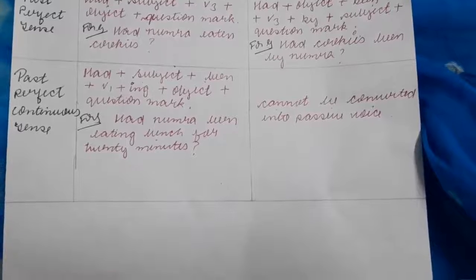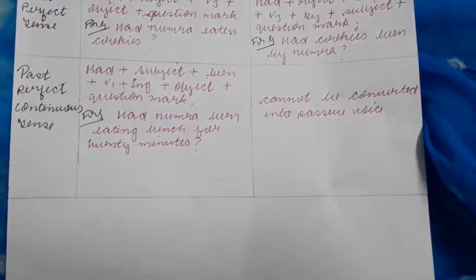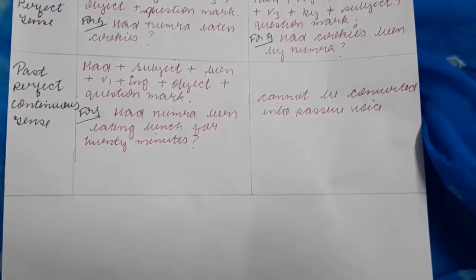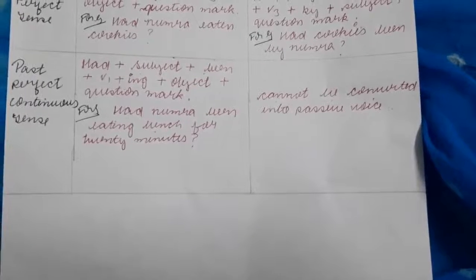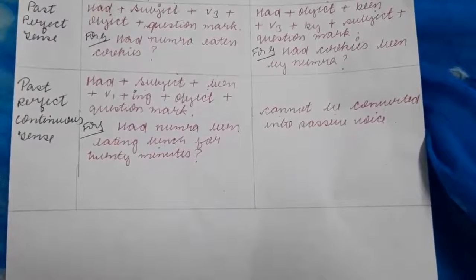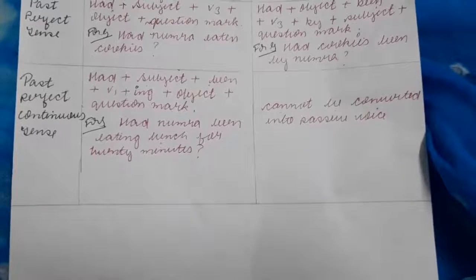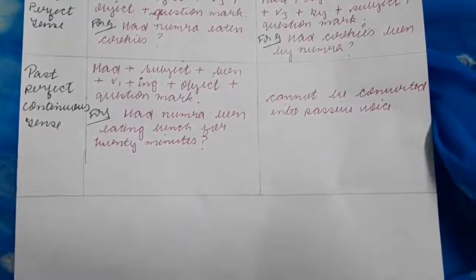Next, past perfect continuous tense. Had plus subject plus been plus verb first form plus ing plus object plus question mark. So had Numera been eating lunch for 20 minutes? Past perfect continuous tense doesn't change in passive voice. So guys, that was all for today's video. I hope you enjoyed it, and if you did, please like and subscribe to my channel. You will get the part 1 link in the description box. Do check it.